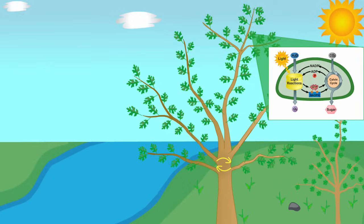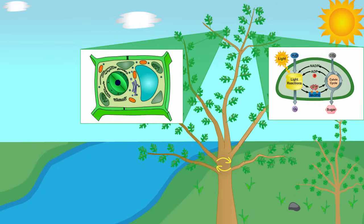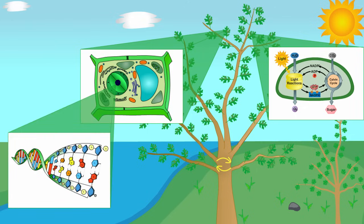If you were to zoom in closely on a leaf using a microscope, you would see that it is composed of tiny individual units called cells. DNA resides within the nucleus of each cell.